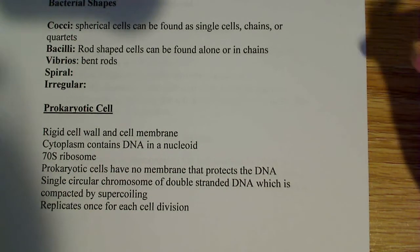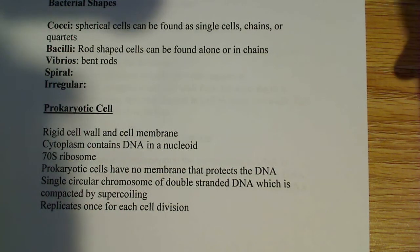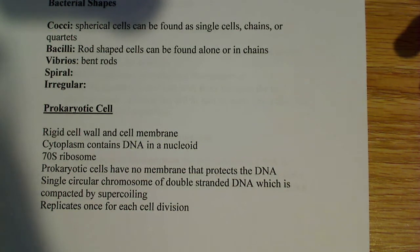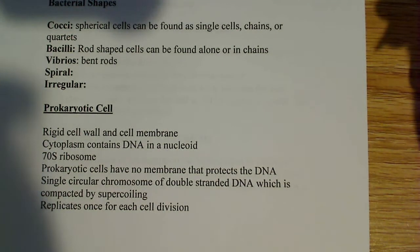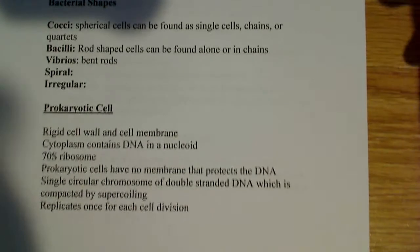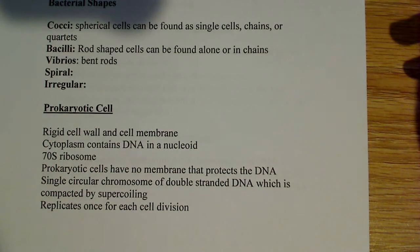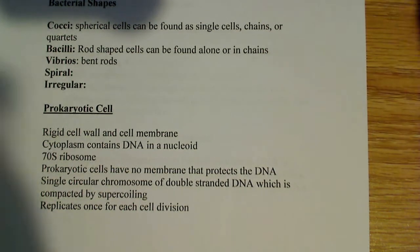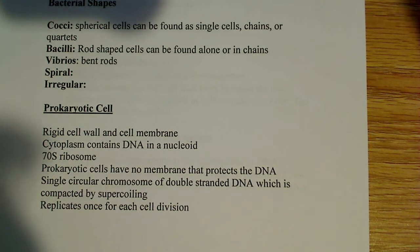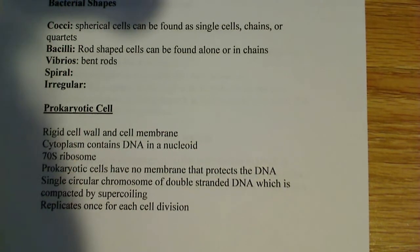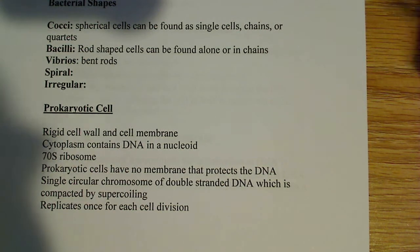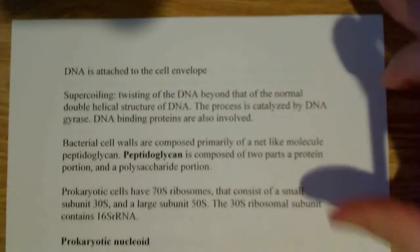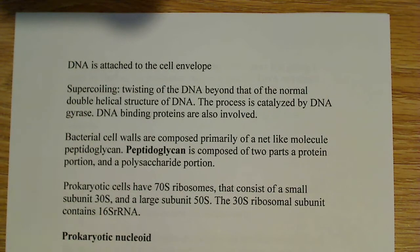Prokaryotic cells have no membrane-bound nucleus — that's important. There are also no membrane-bound organelles. They have a single circular chromosome of double-stranded DNA, which is compacted by supercoiling. Eukaryotic DNA, by contrast, is compacted by complexes with histone proteins. So there are no histone proteins in prokaryotes — another difference. The DNA replicates once per cell division and is also attached to the envelope.